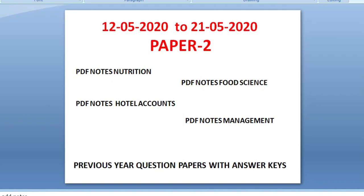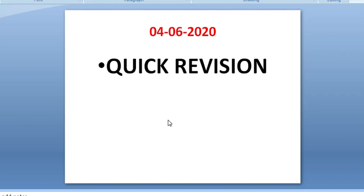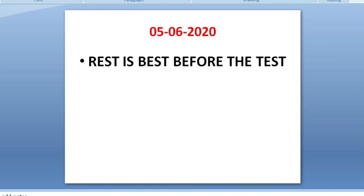From 22nd of May till 3rd of June, we will cover Paper Three, which includes Housekeeping, Front Office, Food and Beverage, and Food Production — complete PDF notes will be provided. After that, previous years' question papers will be shared. On 4th of June, we'll do a quick revision, and on 5th of June, rest before the exam. The exam is on 6th of June.